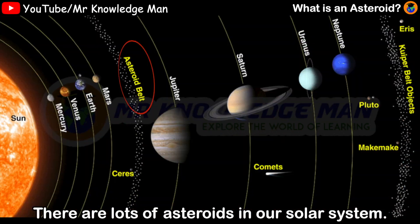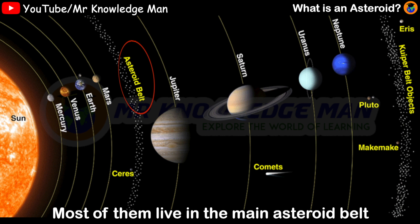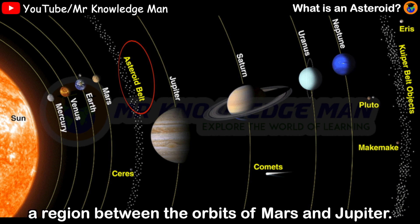There are lots of asteroids in our solar system. Most of them live in the main asteroid belt, a region between the orbits of Mars and Jupiter.